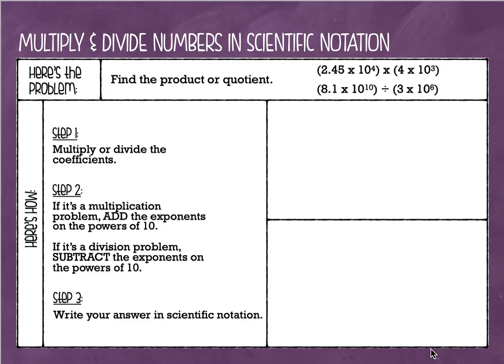Let's get started. Here is the problem. We're going to solve two problems today. We're going to find the product of the first problem and then we're going to find the quotient for the second one. Remember, the product is just the answer to a multiplication problem and the quotient is the answer to a division problem.